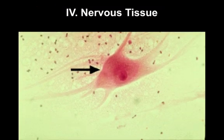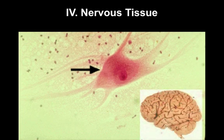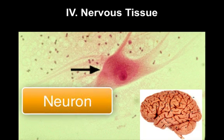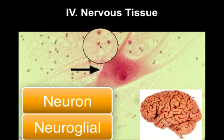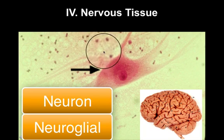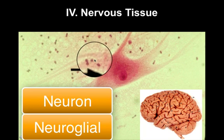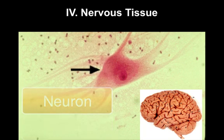The final tissue we need to look at is nervous tissue, or nerve tissue. It is certainly found in the brain and spinal cord, but also runs extensively throughout the body in your nerves. The arrow is pointing to a large nerve cell called a neuron. These are the functional units of the nervous system — they are the ones that transmit messages throughout the body. The smaller dots around the neuron are support cells called neuroglial cells. These are also considered nerve tissue cells, and there are many different kinds of neuroglial cells.